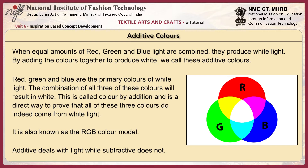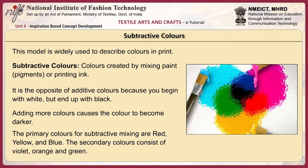Additive deals with light while subtractive does not. The subtractive model is widely used to describe colors in print. Subtractive colors are created by mixing paint, pigments or printing ink. It is the opposite of additive colors because you begin with white but end up with black — adding more colors causes the color to become darker. The primary colors for subtractive mixing are red, yellow and blue, and the secondary colors consist of violet, orange and green.